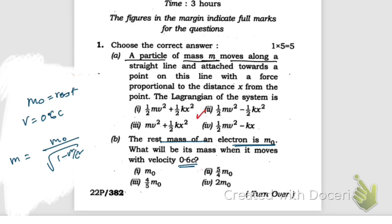If we use this formula, then m equals m₀ divided by root over one minus v squared. V is 0.6c, so 0.6 squared times c squared divided by c squared. The c squared cancels out.